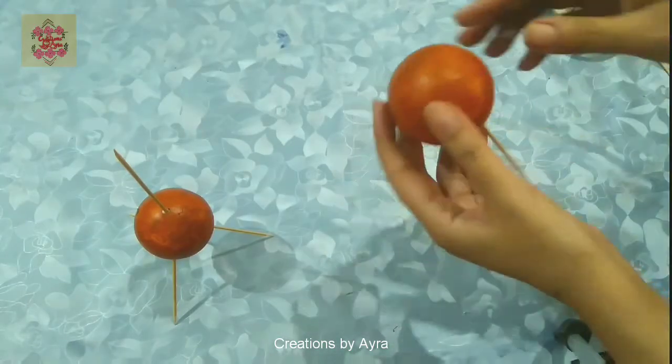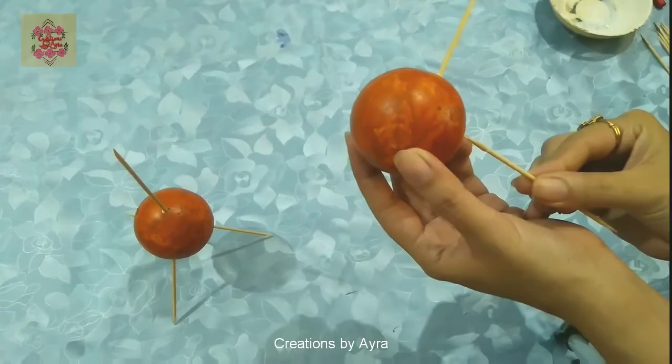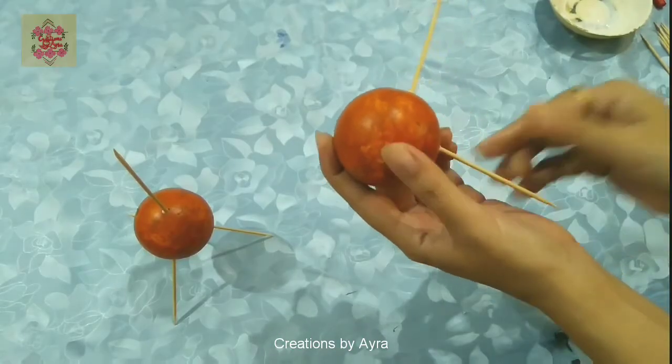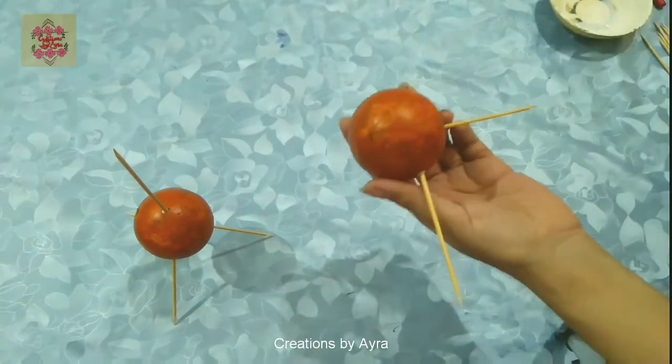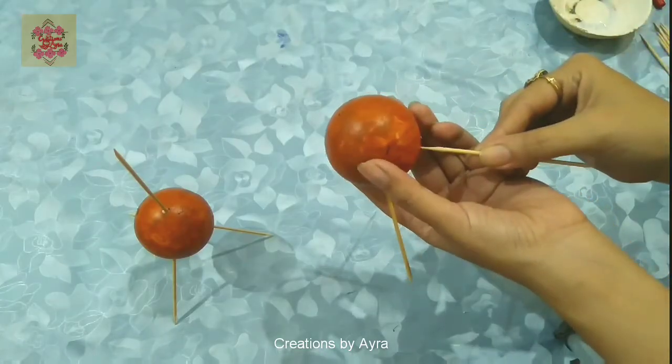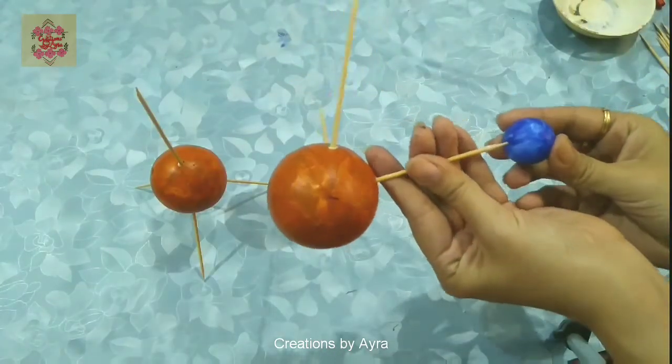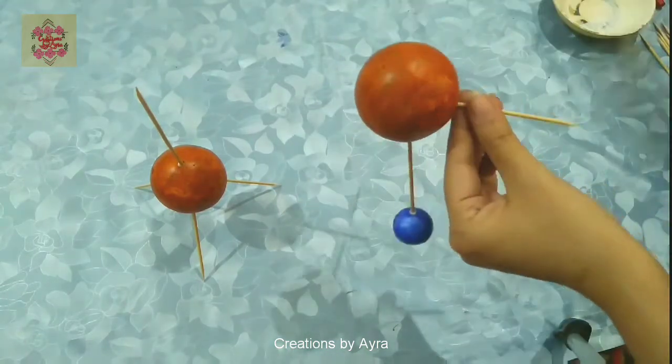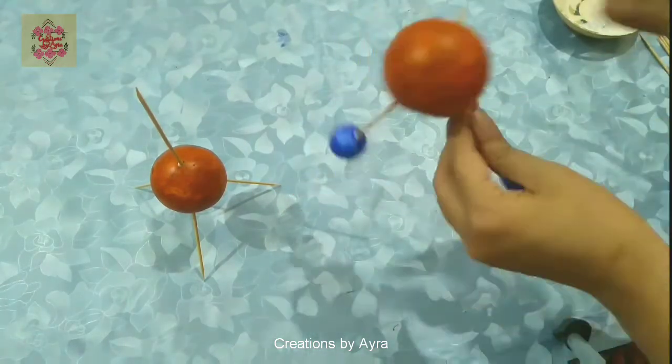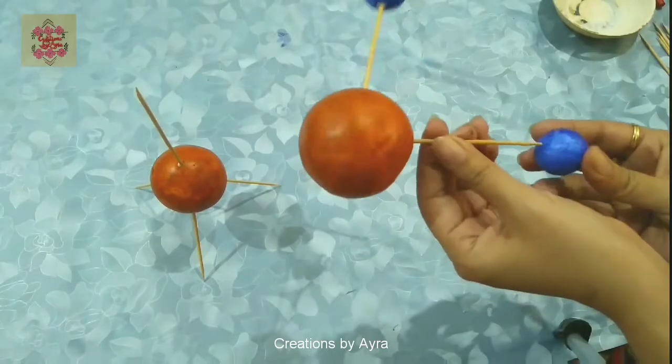For the second larger ball, I'm again arranging these barbecue sticks. Then on the second end of each stick, insert the smaller ball.